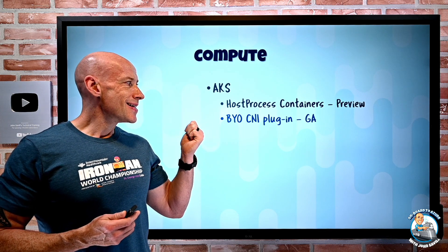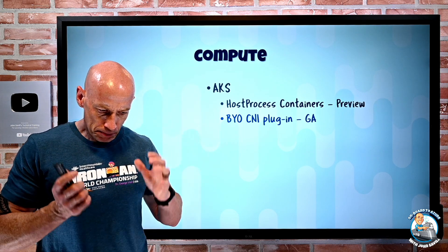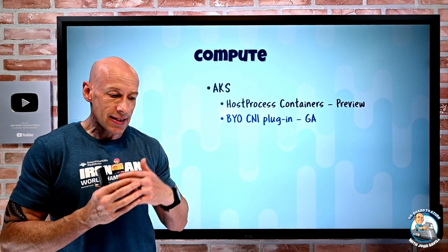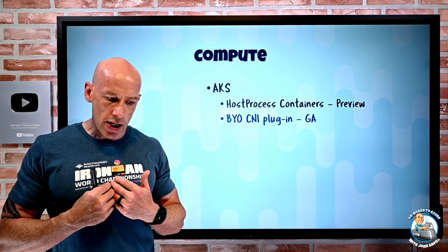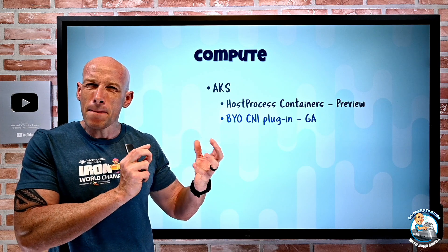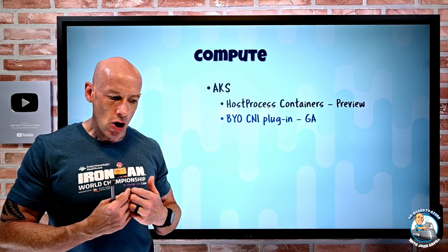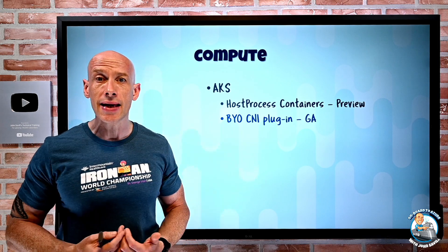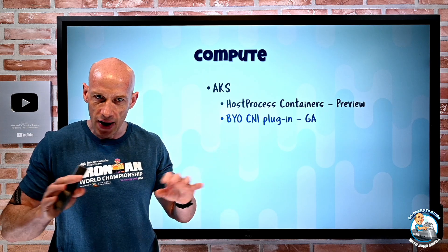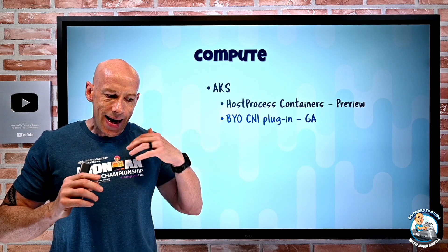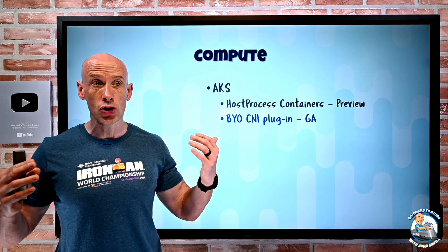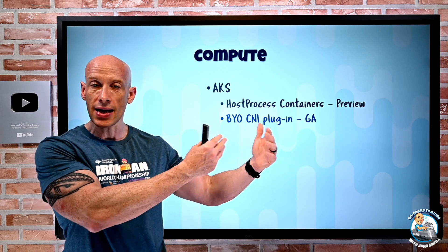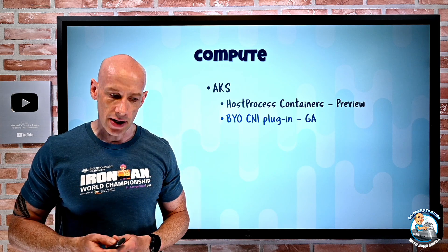Bring your own CNI plugins for AKS. CNI is the container network interface. By default, Kubernetes doesn't provide a network interface — we're used to Kubenet for very basic networking or Azure CNI for more advanced scenarios. But what I can now do is deploy my AKS cluster without any CNI, without any network plugin, and then deploy almost any commercial or open source CNI. This gives me consistency on networking both for AKS in Azure and for Kubernetes outside of Azure.